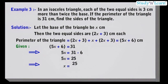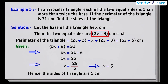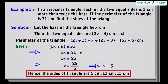This implies x is equal to 25 by 5, that means x is equal to 5. Hence the sides of the triangle will be given by putting the value of x equals 5 in x and 2x plus 3. So doing this, we get the base as 5 cm, and when we put x equals 5 in 2x plus 3, we get 13 cm and 13 cm. Hence the sides of the triangle are 5, 13, and 13 cm.